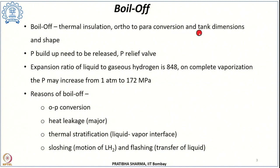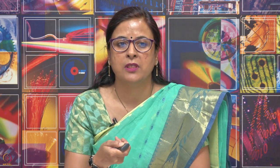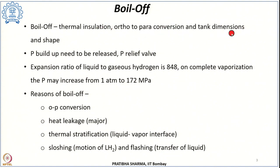Boil-off also depends on tank dimension — how large the tank is, its capacity, and its shape. The surface of the tank will be exposed to environmental conditions, so to reduce boil-off losses we need a lower surface-to-volume ratio. Higher capacity tanks will have lower boil-off, and spherical shapes, which have a lower surface-to-volume ratio, will also have lower boil-off. However, constructing a sphere is complicated from a manufacturing standpoint, so cylindrical tanks — held either horizontally or vertically — are usually used. In summary, boil-off depends on thermal insulation quality, ortho-to-para conversion, tank dimension, and shape.